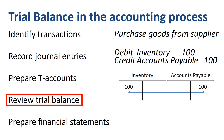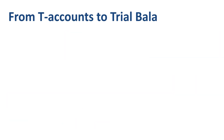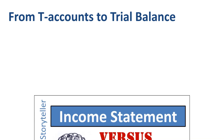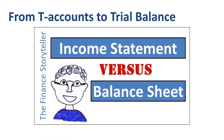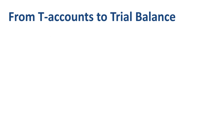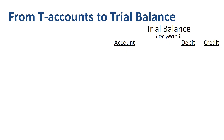A trial balance is a listing of all ledger accounts, along with their respective debit or credit balances for the period. Let's take the journal entries from the income statement versus balance sheet video to prepare a trial balance. It covers a certain accounting period — in this case year 1 of a brand new company — and lists ledger accounts with their respective debit or credit balance.